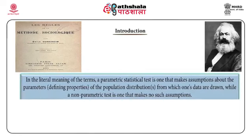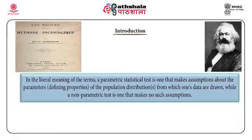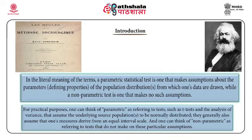In the literal meaning of the terms, a parametric statistical test is one that makes assumptions about the parameters defining properties of the population distributions from which one's data are drawn. A non-parametric test is one that makes no such assumptions. For practical purposes, one can think of parametric as referring to tests such as t-tests and the analysis of variance that assume the underlying source populations to be normally distributed. They generally also assume that one's measures are derived from an equal interval scale, and one can think of non-parametric as referring to tests that do not make these particular assumptions.